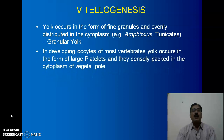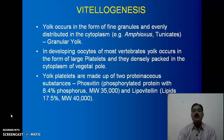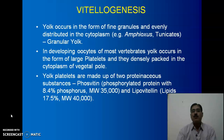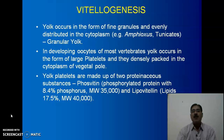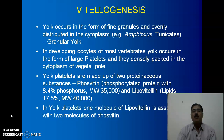In the developing oocytes of most vertebrates, yolk occurs in the form of large platelets, densely packed in the cytoplasm of the vegetal pole. The developing egg has two clear-cut poles: the vegetal pole and the animal pole. The vegetal pole is where much of the yolk is present. The yolk platelets are made up of two proteinaceous substances: phosphatin, a phosphorylated protein with 8.4% phosphorus and a molecular weight of approximately 35,000; and lipovitellin, which contains 75.5% lipids with a molecular weight of 40,000. In yolk platelets, one molecule of lipovitellin is associated with two molecules of phosphatin.